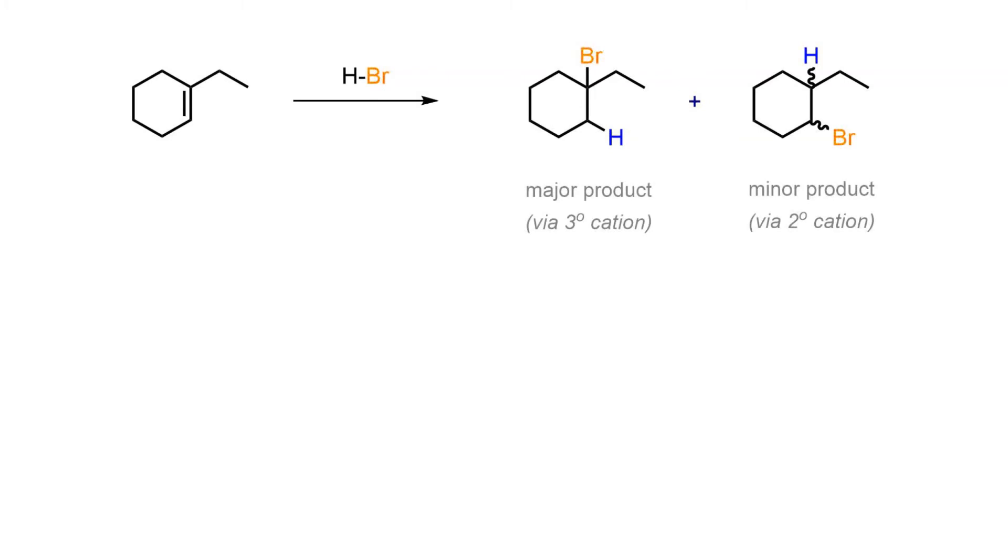When alkenes are treated with hydrochloric, hydrobromic, or hydroiodic acid, they undergo an addition process to form alkyl halides.